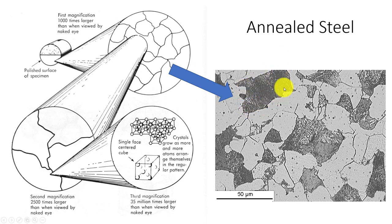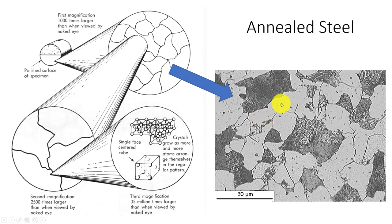You guys have already been in lab where we cut some metals, polish and etch, and reveal the grains. We should see in a steel something like this. This is a low carbon steel that's been annealed — heated up and slowly cooled. We're going to see some dark grains, which is what we call pearlite. You need to start remembering these names. The white stuff here is going to be ferrite.